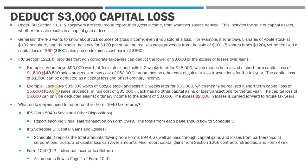Now let's look at an example where the deduction is capped. Jack buys $35,000 worth of Google stock and sells it five weeks later for $30,000, giving him a $5,000 short-term capital loss with no other capital transactions for the year. The capital loss of $5,000 can only be deducted against ordinary income to the extent of $3,000 — that's the Section 1211(b) limitation. The excess $2,000 is a capital loss carryforward that rolls to future tax years, where it can offset future capital gains or, again, up to $3,000 of ordinary income under 1211(b).